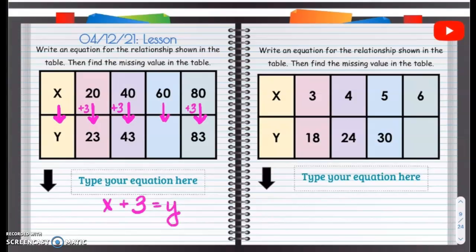So what is 60 plus 3? Well, it's going to be 63. So we have 63 here, and then our equation is going to be x plus 3 equals y.